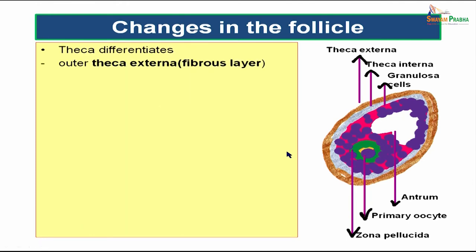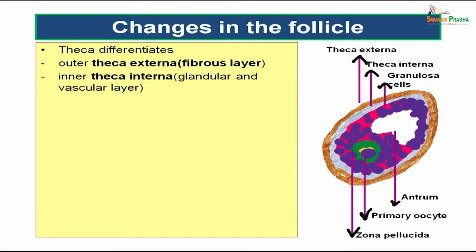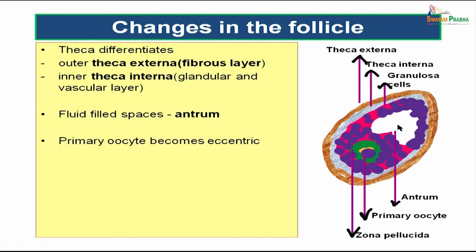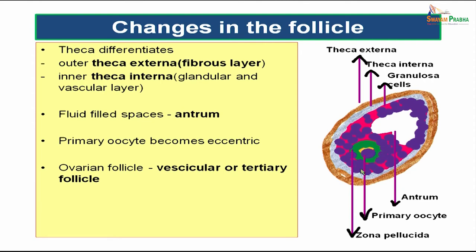The theca differentiates into two layers: the outermost theca externa, which is fibrous, and the inner theca interna, which is glandular or vascular. Within the granulosa cells, many fluid-filled spaces appear, which coalesce to form a larger cavity called the antrum. Due to this antrum, the primary oocyte gradually shifts towards the periphery, becoming eccentric in position. The ovarian follicle with a large antrum is now called the vesicular or tertiary follicle. The follicular cells surrounding the oocyte are called the cumulus oophorus.